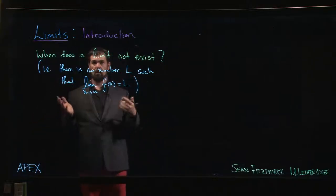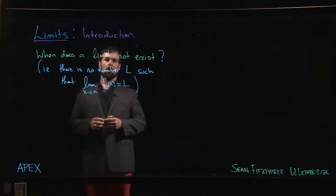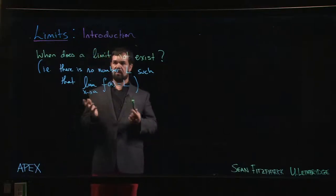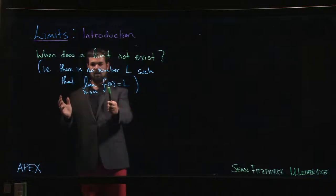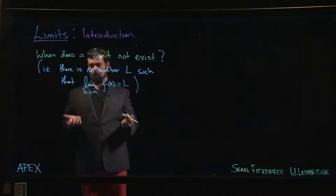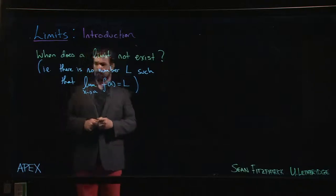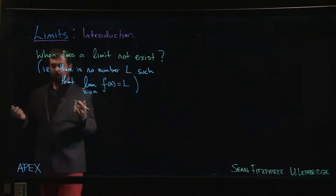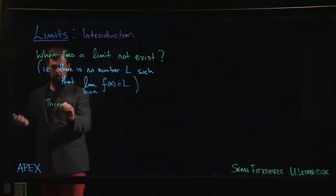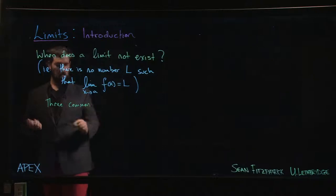So when is this impossible? When is it not possible to find this number L, this y value, so that the value of f(x) will be close to L whenever x is close to a? When can we not find it? Well, there are a number of things that can go wrong, but there are sort of three common scenarios.